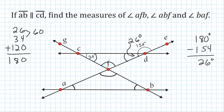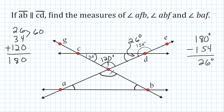So this angle has a measure of 120 degrees. We can see that the two transversals intersect at point F, and what we have there is vertical angles. Whenever two lines intersect each other, the angles across from each other are congruent — those are called vertical angles. So if this angle is 120 degrees, the vertical angle across from it is also 120 degrees.